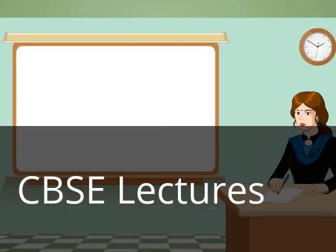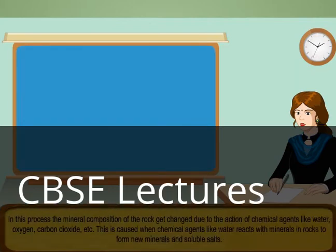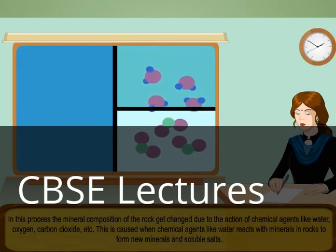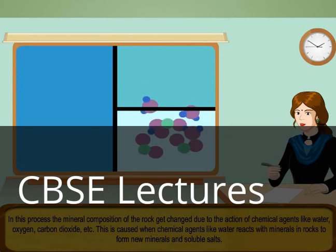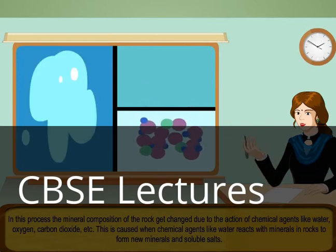In chemical weathering, the mineral composition of the rock gets changed due to the action of chemical agents like water, oxygen, carbon dioxide, etc. This is caused when chemical agents like water react with minerals in rocks to form new minerals and soluble salts.